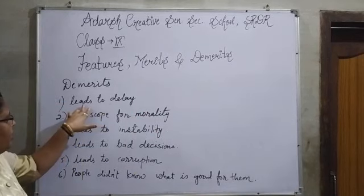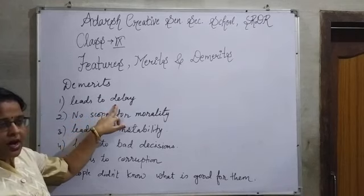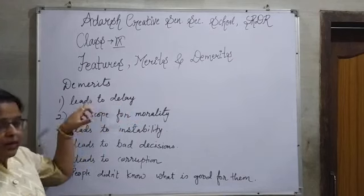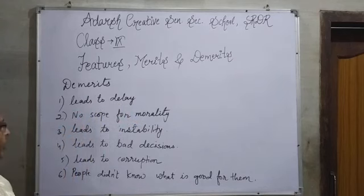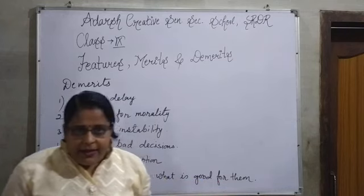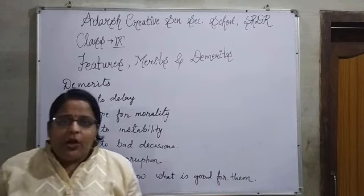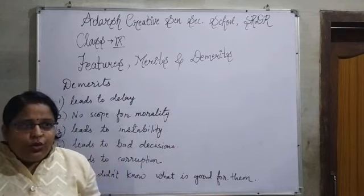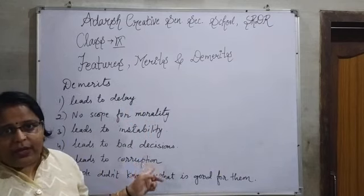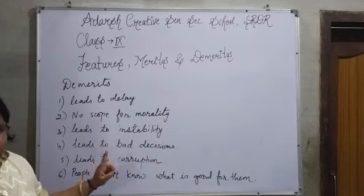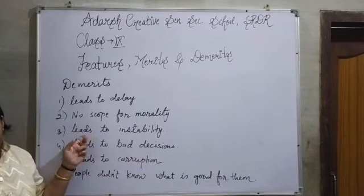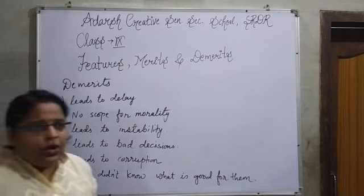Now we will discuss the demerits of democracy. First, it leads to delays — decisions are not given immediately in a democratic form of government, which is a great drawback. Second, there is no scope for morality, because political parties, in order to win elections, do not follow moral values and sometimes knowingly or unknowingly act in immoral ways.